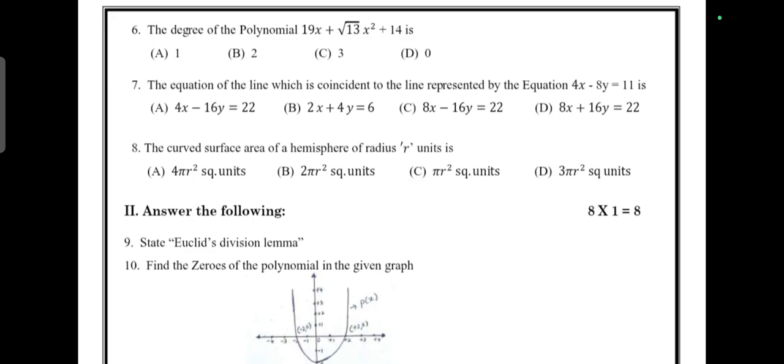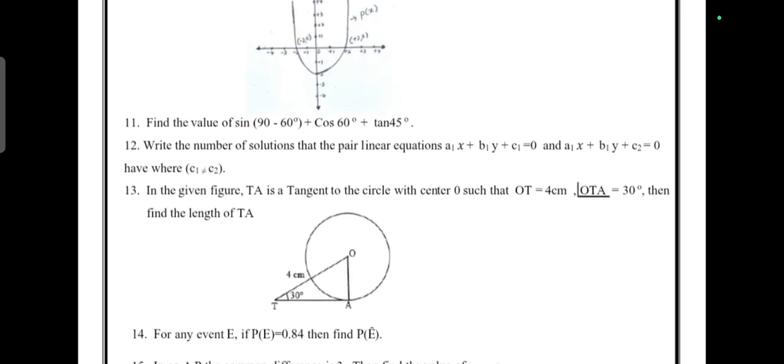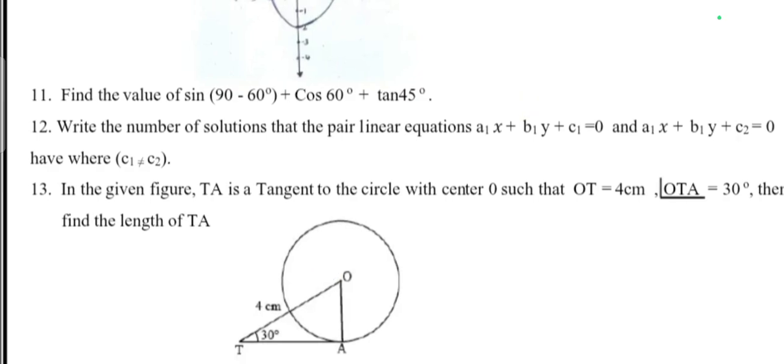Next, one word answer: State Euclid's division lemma. Then find the zeros of the polynomial in the given figure. Question 11: Find the value of sin 90° - sin 60° + cos 60° + tan 45°.